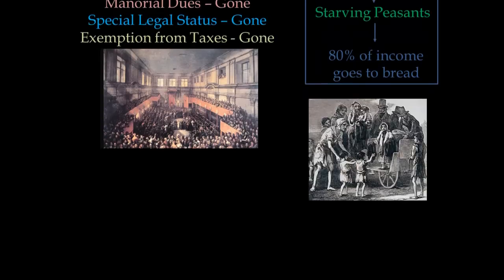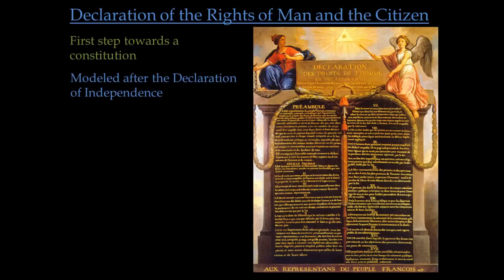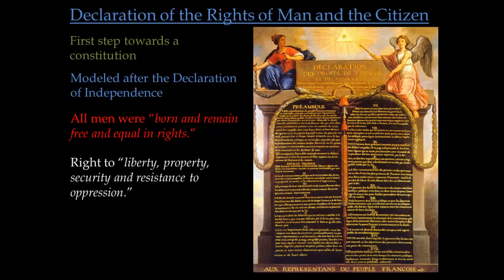This is going to lead to the Declaration of the Rights of Man and the Citizen. We consider this France's first step towards a written constitution to kind of control the king. It's modeled after the Declaration of Independence, which was written 13 years prior to it. It proclaimed some basic Enlightenment ideas — that all men were born and remained free and equal in rights — and along with that, it provided for the right to liberty, property, security, and resistance to oppression.